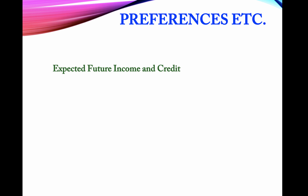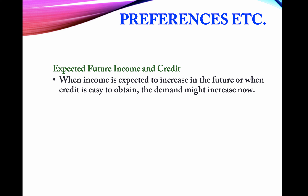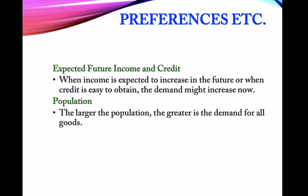Then there is expected future income and credit. Our income may not have increased right now, but if we expect a high future income, that expectation will start increasing our demand right now. Population, as mentioned, means more demand by more individuals, leading to a shift in the demand function to the right.